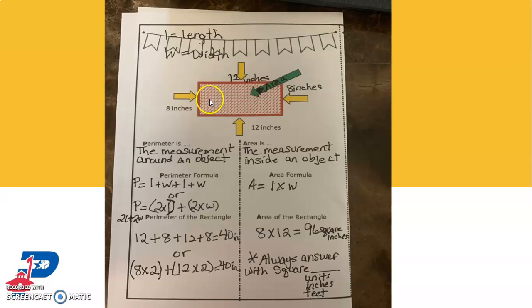It's L plus W plus L plus W. In other words, the length plus the width plus the length plus the width. So you have to measure those four, have the measurements for those four dimensions in order to figure out the perimeter.